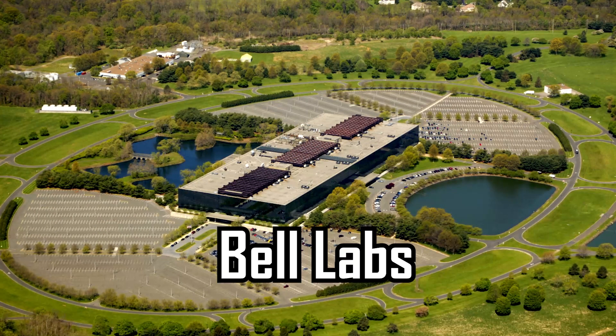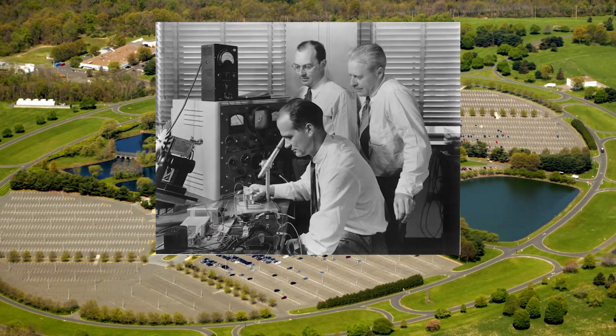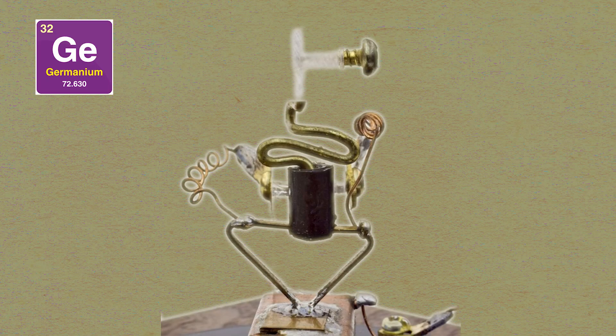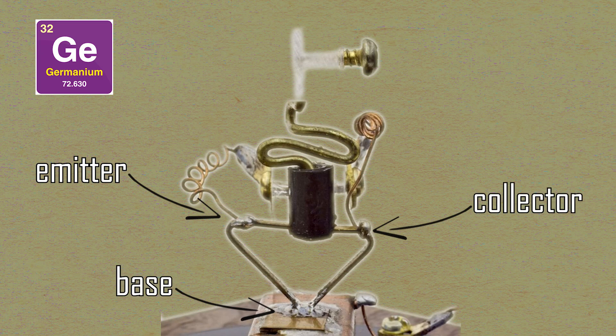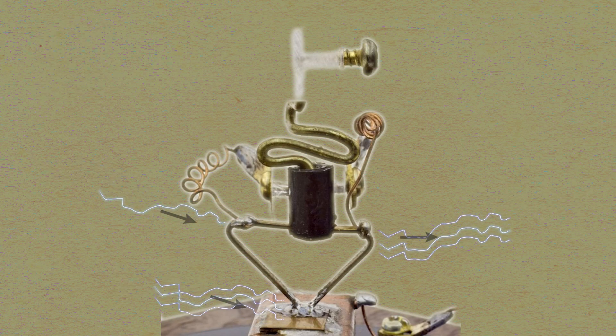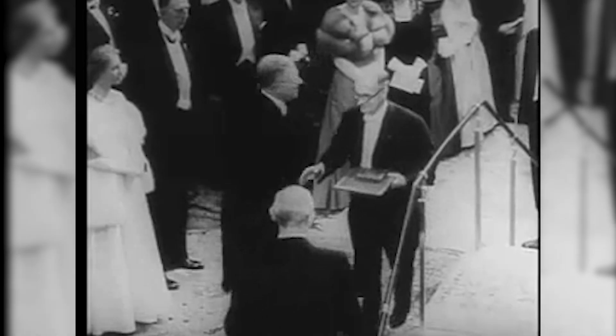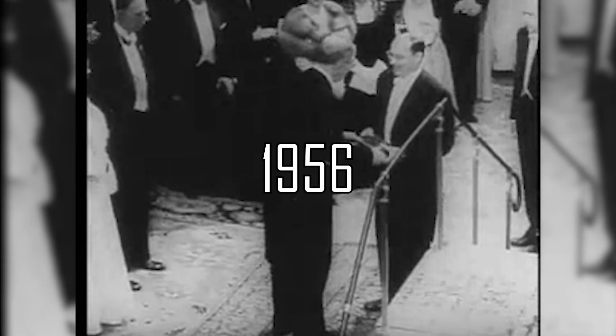That was done in the Bell Labs over two decades later, in 1947. It was a relatively small device made of germanium with three electrodes, called the emitter, base, and collector. It was capable of amplifying electronic signals and controlling the flow of electric current. The Bell Labs researchers were awarded the Nobel Prize in Physics for that in 1956.